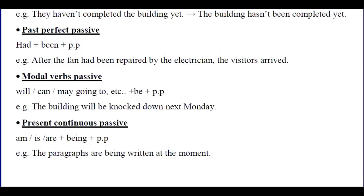Past perfect passive: 'After the fan had been repaired by the electrician, the visitors arrived.' The object is 'the fan.' We conjugate verb to be according to the tense — 'had been' — followed by the past participle of the verb, which is 'repaired.'